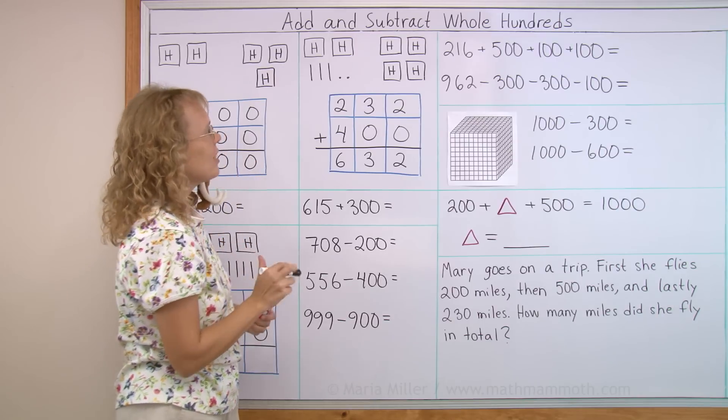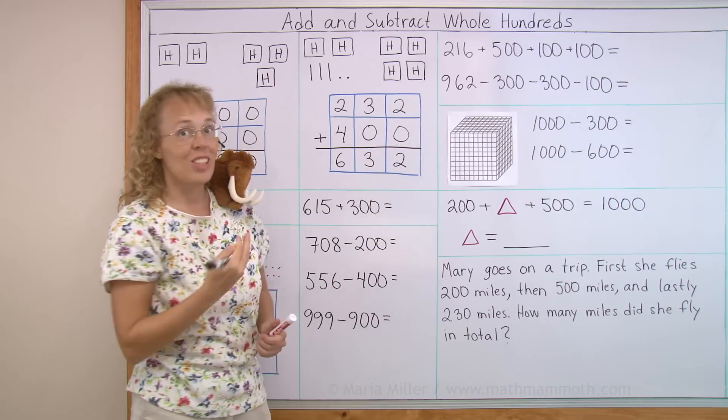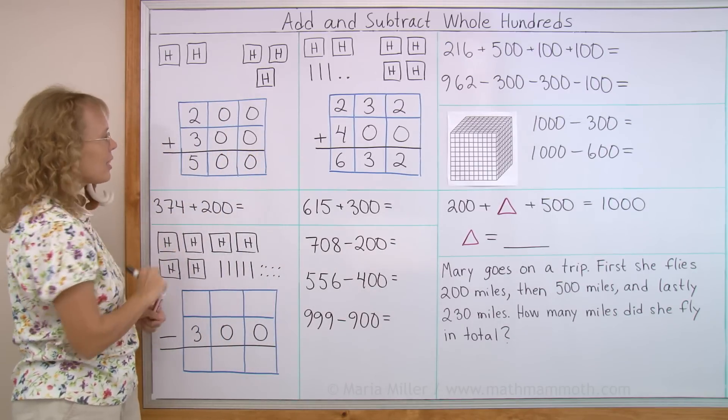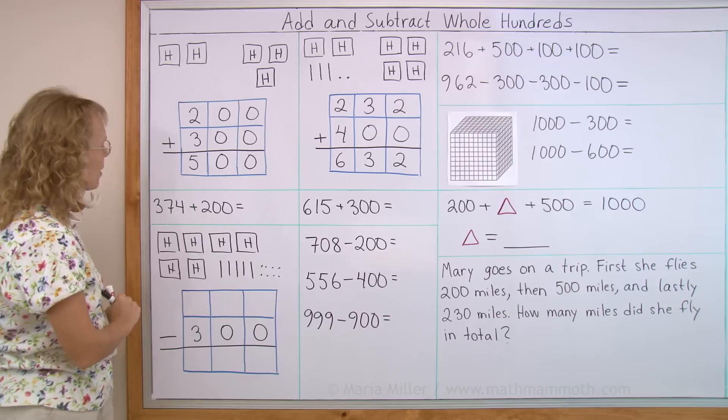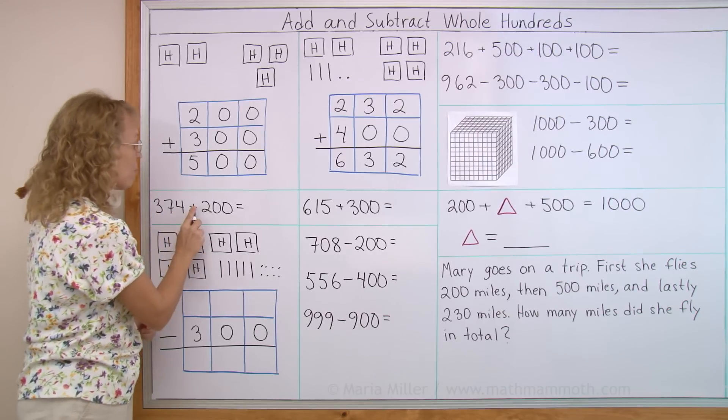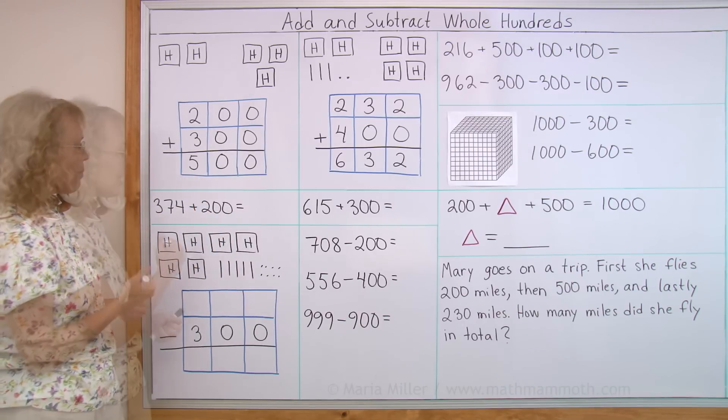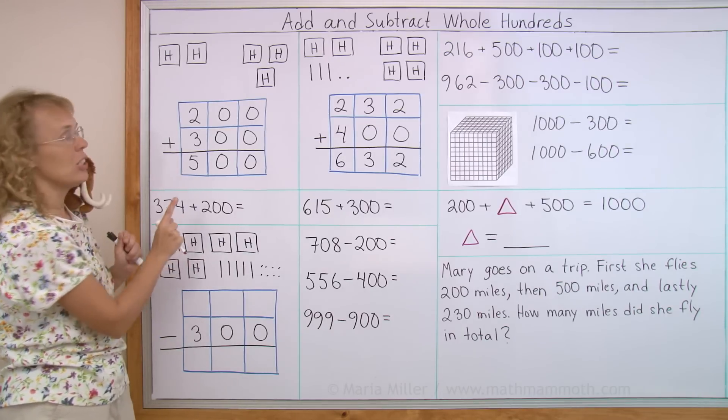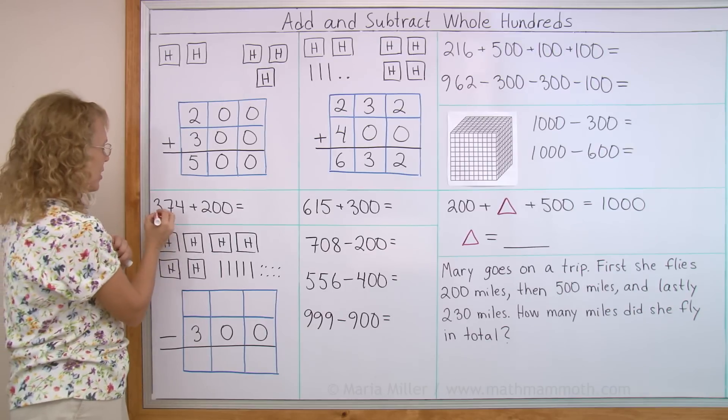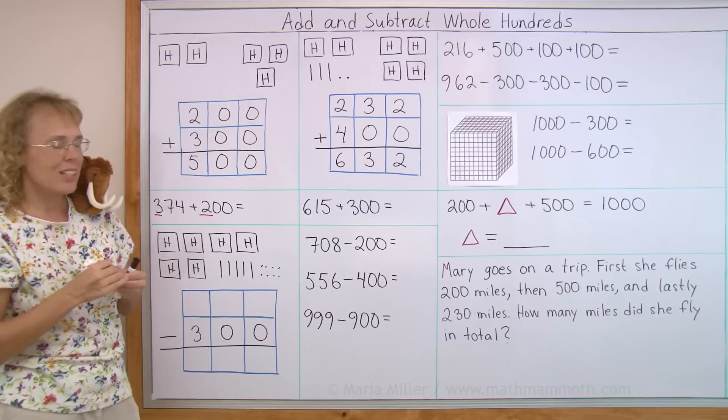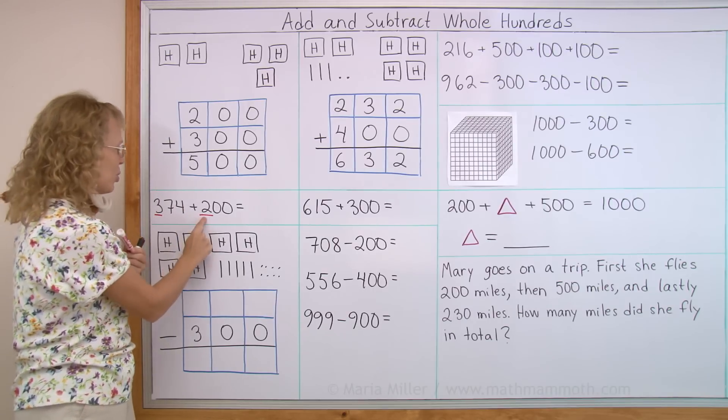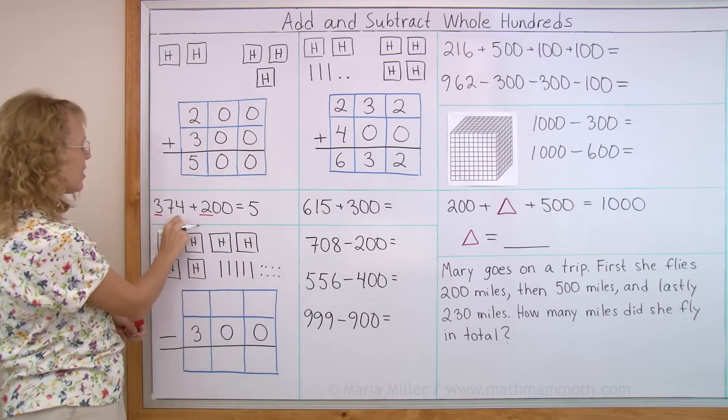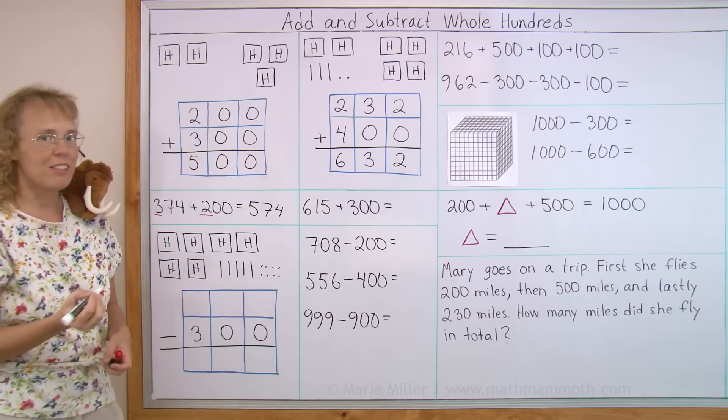And you noticed that the ones and the tens did not change. And we can use that principle when we are adding just mentally without writing the numbers in the grid, 374 plus 200. You see, since we are adding whole hundreds, then these tens and the ones are not going to change any. It's only the hundreds that we need to worry about. Here's 300, here's 200. 3 plus 2, 5. So I get 500, and then this 74, it's not going to change, 574.